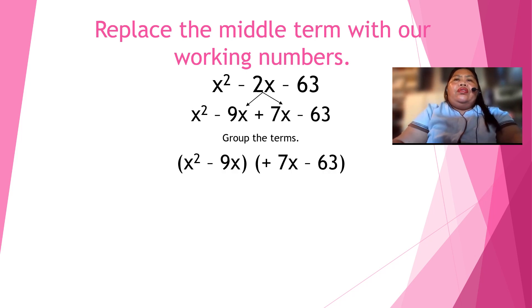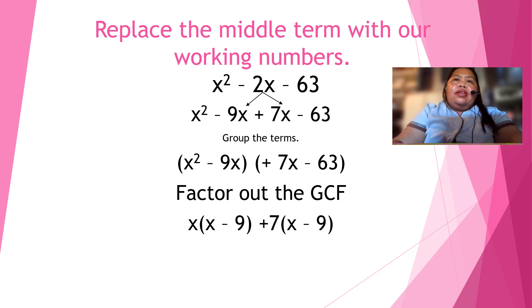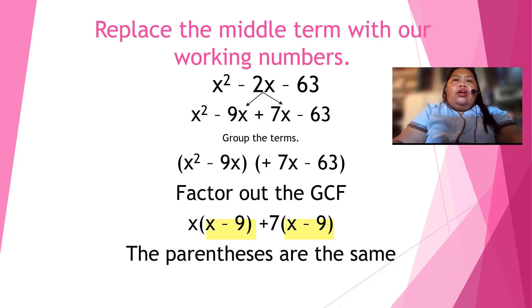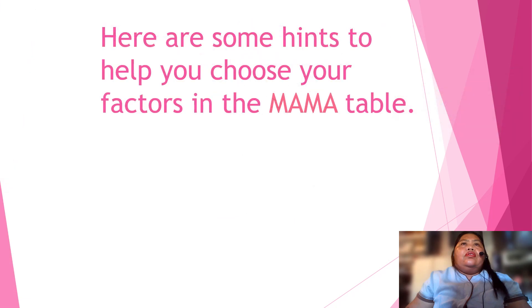So, let us replace the middle term with our working numbers. So, we have x squared minus 2x minus 63. Our working numbers: x squared minus 9x plus 7x minus 63. Then, group the terms. Factor out the GCF. The GCF is x. Then, divide. So, we have x minus 9. The parentheses are the same. So, the factors are (x plus 7) and (x minus 9).